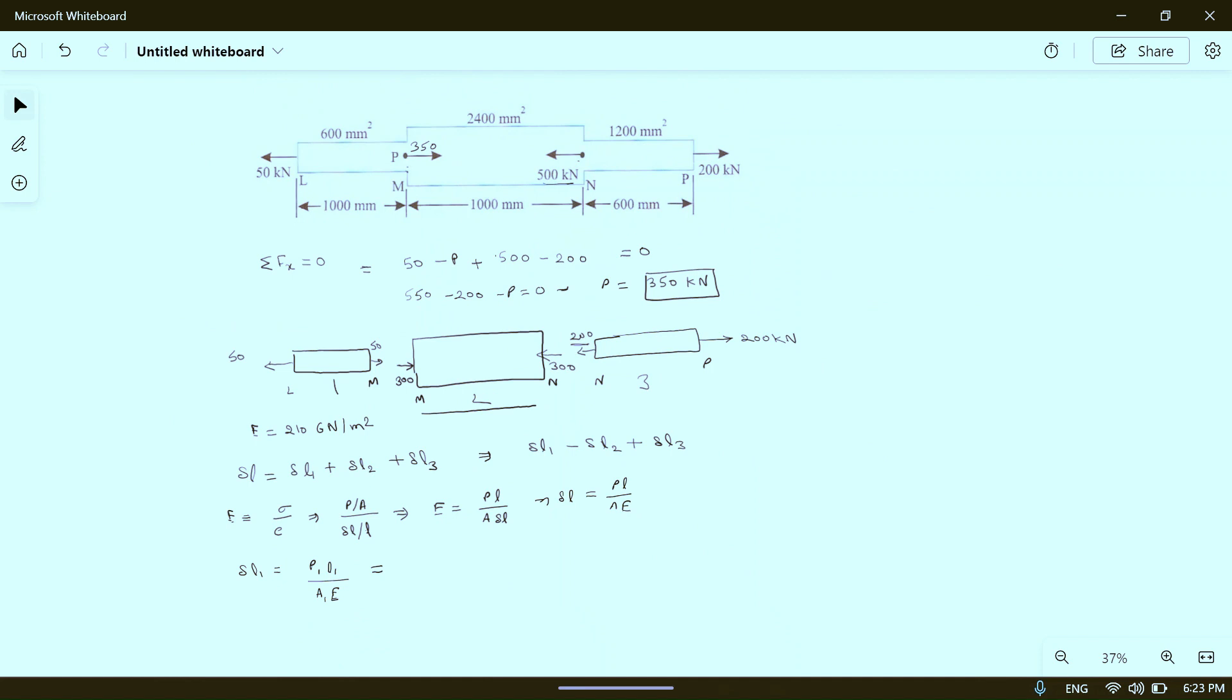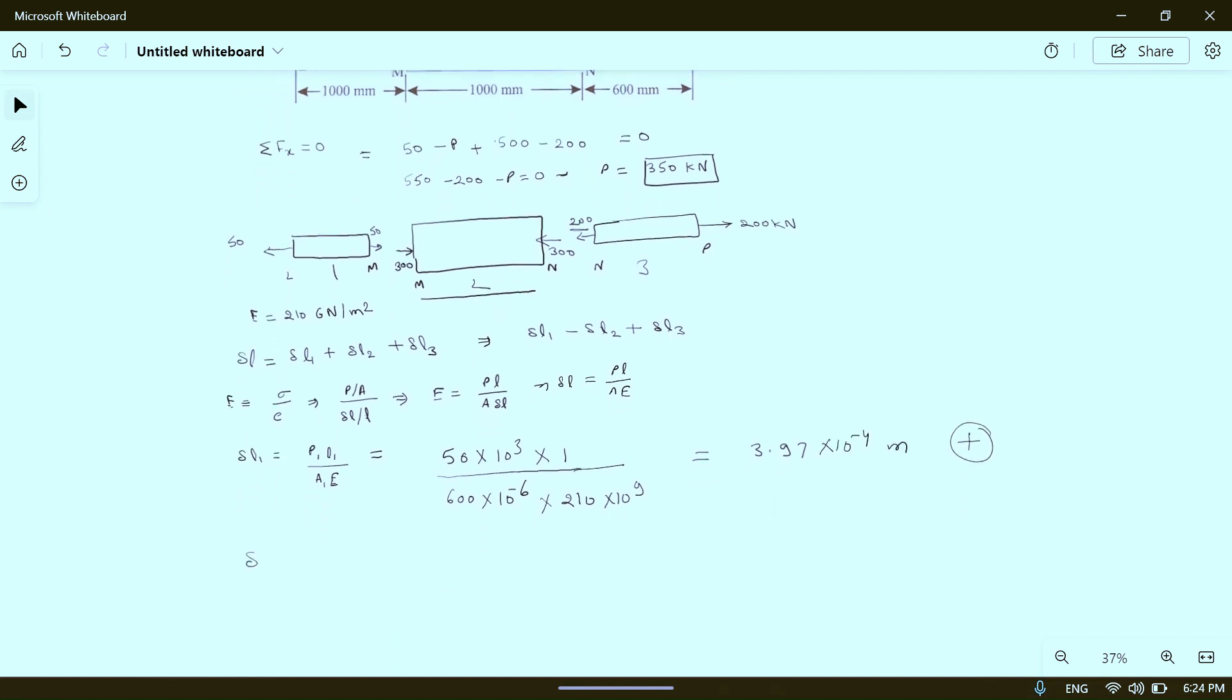P1 is 50 kilonewtons, so 50 times 10 to the power 3 newtons, times L1 is 1000 mm which equals 1 meter, divided by A1 is 600 mm square which equals 600 times 10 to the power minus 6 meter square, times E is 210 times 10 to the power 9. If you calculate this you will get 3.97 times 10 to the power minus 4 meters, and it is plus because length is increasing.